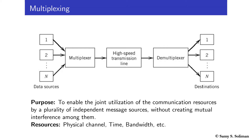The goal of multiplexing is to enable joint utilization of communication resources by multiple independent information sources or message sources without creating mutual interference between them. For example, if I have a high speed transmission line — a channel that can support high data rate transmission — I can use the channel to transmit independent signals from independent message sources, but the condition for multiplexing to be successful is that it must be done without creating interference between the signals.